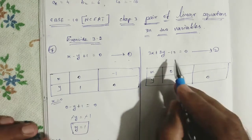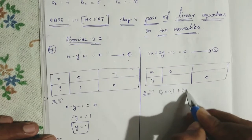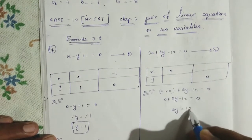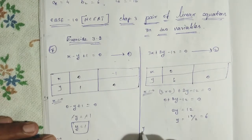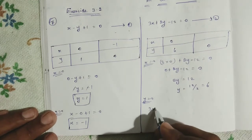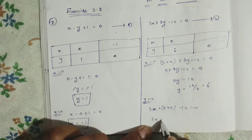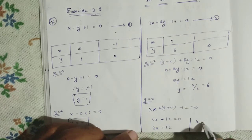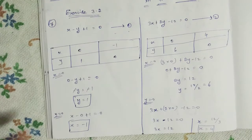For equation 2, put x equal to 0: 3 into 0 plus 2y minus 12 equal to 0, so 2y equals 12, therefore y equals 6. That gives point (0, 6). Then put y equal to 0: 3x minus 12 equal to 0, so 3x equals 12, therefore x equals 4. That gives point (4, 0).